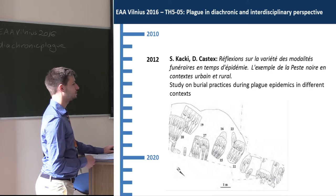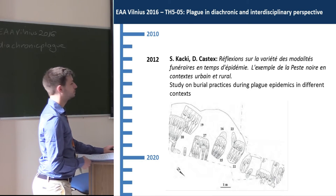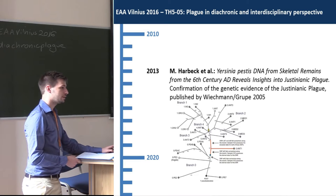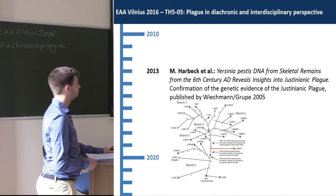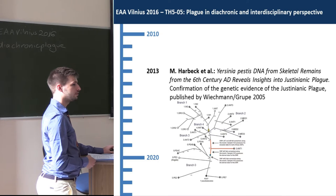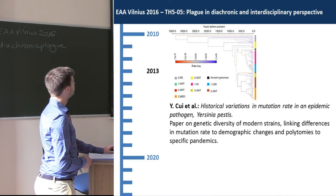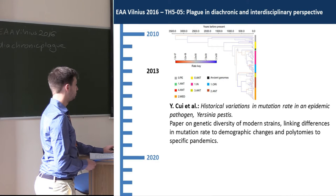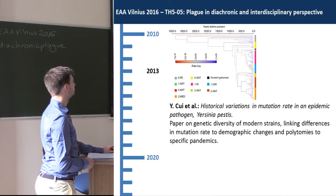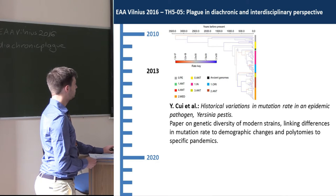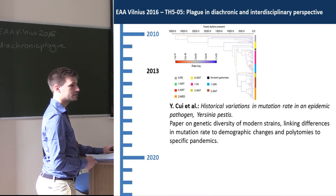In 2012, a study by Sasha Kaki and Dominique Castex addressed burial practices in different plague contexts. The following year, a study by Haak and colleagues confirmed the earlier results by Wichmann and Grupe on the Justinianic plague and also placed the strains on the phylogenetic tree. In the same year, a large study by Cui and colleagues on modern plague strains linked differences in mutation rate to demographic changes and polytomies to specific pandemics.